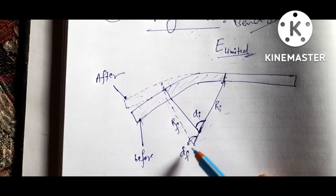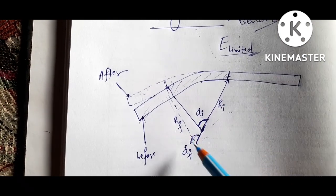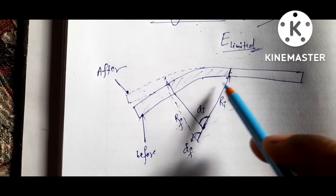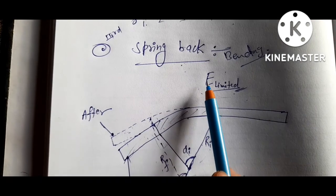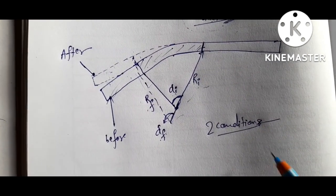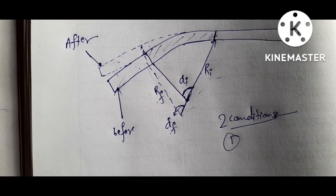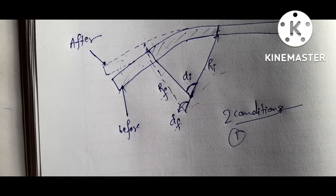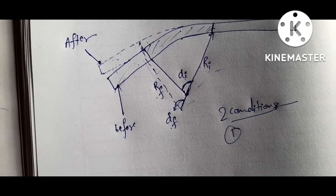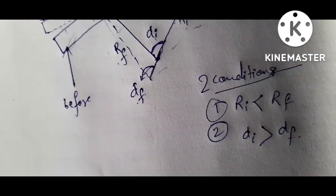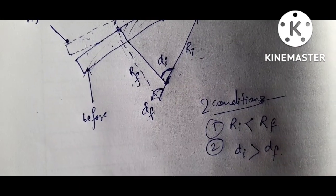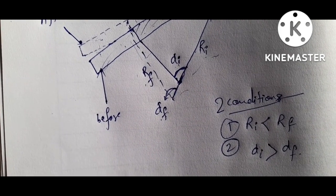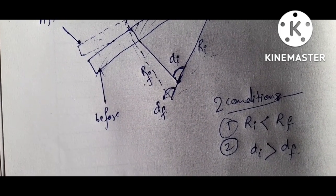This is the final bend angle alpha-F, and the initial values are alpha-I and RI. Spring back happens under two conditions: first, the final bend radius RF is larger than the radius to which it was bent; second, the final bend angle after spring back is smaller than the angle to which it was bent.